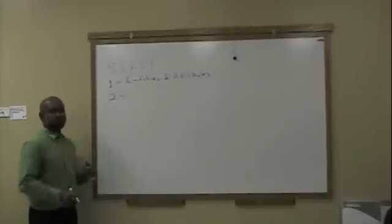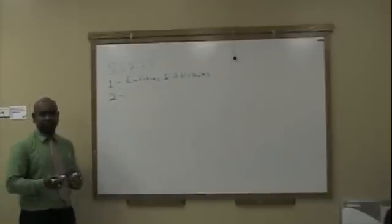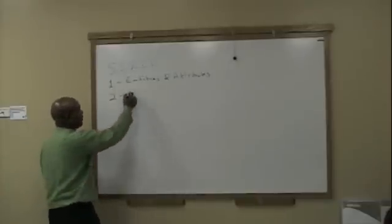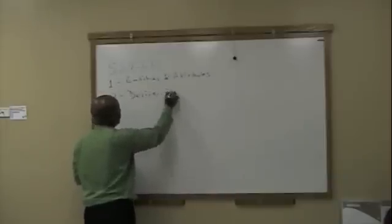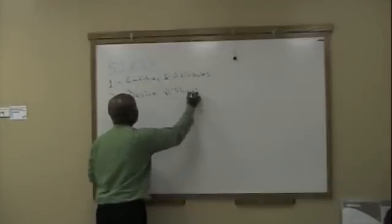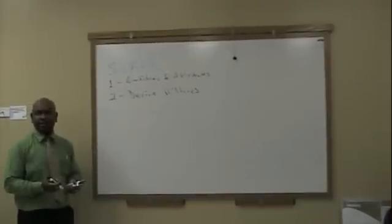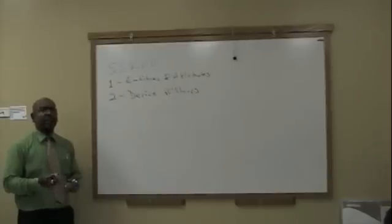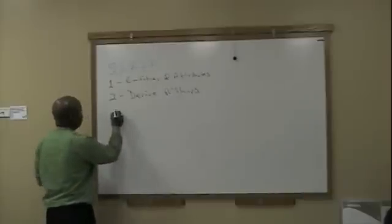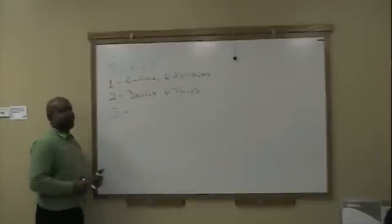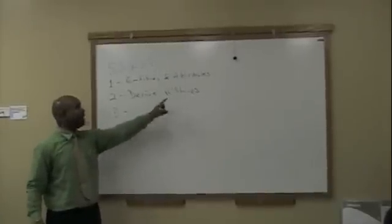Secondly, the second step is relationships. You derive the relationships between the entities. And how do we do that? With the matrix, that is correct. We use the entity-entity matrix to derive all of the relationships.